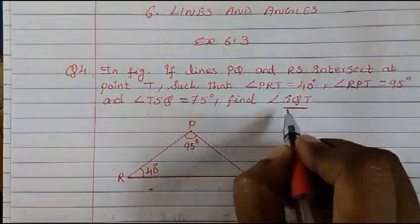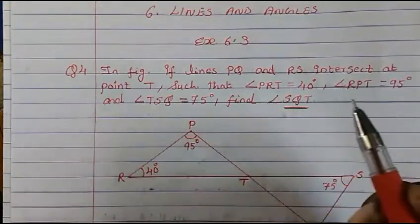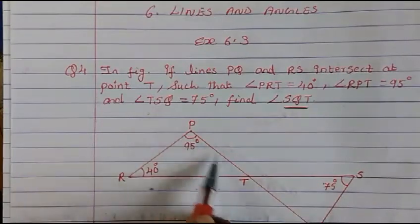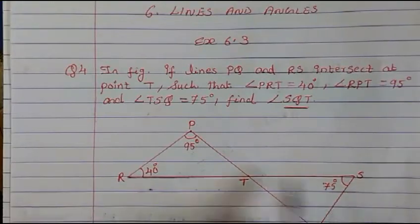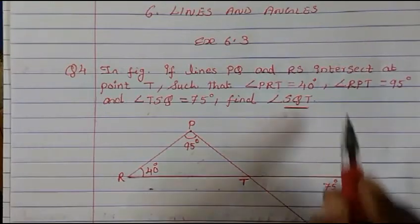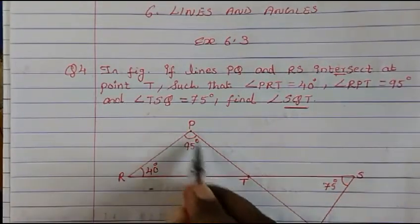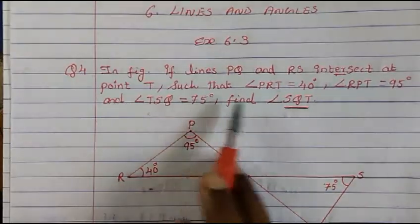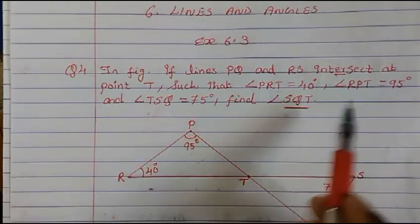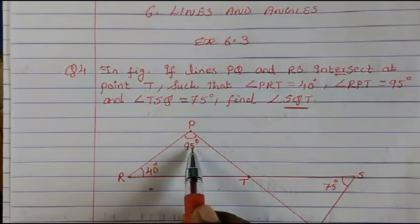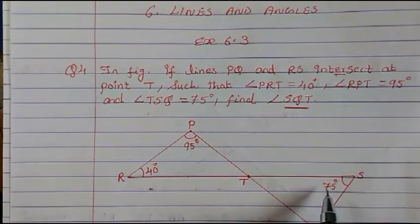So this is what we have to find out. It is given to us that lines PQ and RS intersect at point T. PQ is this line and RS is this line, and they are intersecting at point T. Such that angle PRT is 40 degrees, angle RPT is 95 degrees, and angle TSQ is 75 degrees.